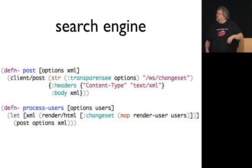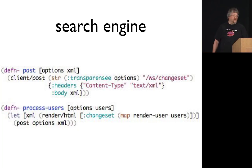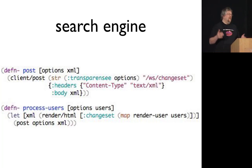I like the clj-http library because it's very easy to just post to some endpoint. This is a standalone process so we're pulling options from tools.cli. To process users, we run Hiccup to generate the XML — it's a changeset, and we just map render-user across the set of users that have changed. We write a function that renders users and don't have to worry about anything else; then we just post the XML. Very concise.